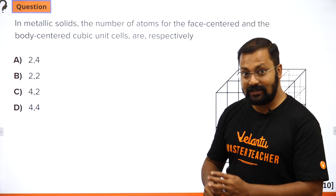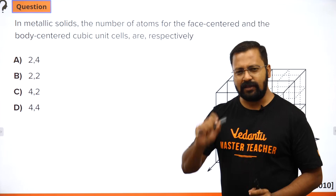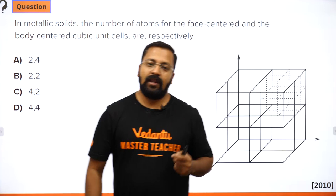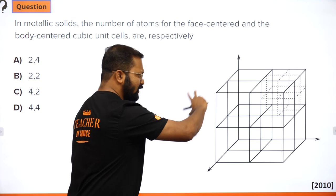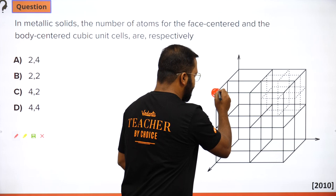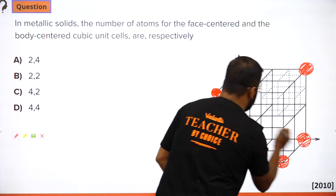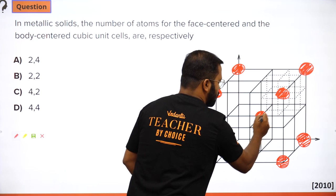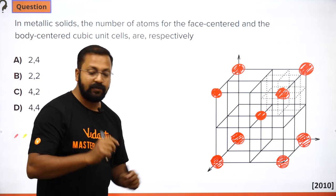The first question is from metallic solids — that's solid state. The number of atoms for the face-centered and the body-centered cubic unit cell are respectively. This is very basic. If you have studied solid state, this is a starting question from 2010. If we consider a cubic room, the cube is divided into 8 smaller cubes. For body-centered cubic, atoms are present at the corners.